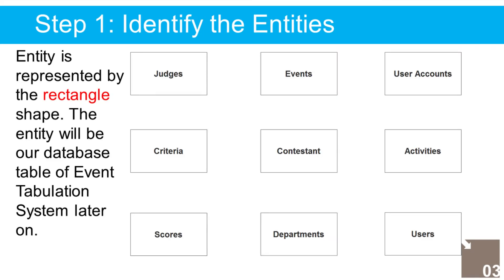Step 1: Identify all entities. An entity is represented by a rectangle shape and will become our database tables in the event tabulation system. In the event tabulation system we have the following entities: 1. Users, 2. User Accounts, 3. Activities, 4. Event, 5. Contestants, 6. Department, 7. Criteria, 8. Scores, 9. Judges.